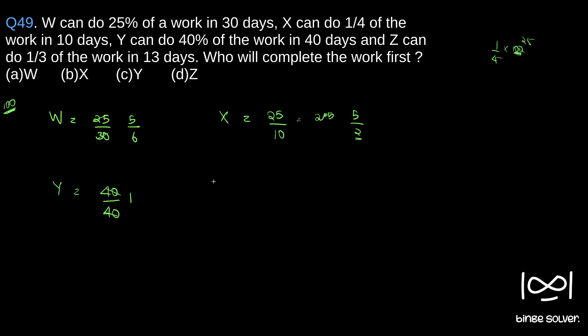Next we will calculate for Z. Z can do 1/3 of work in 13 days, so 1/3 means 100 by 3 into 13. This is the percentage of work Z completes in one day. If you see, 13 into 3 is 39, so 100 by 39 it is. This much work Z completes in one day.